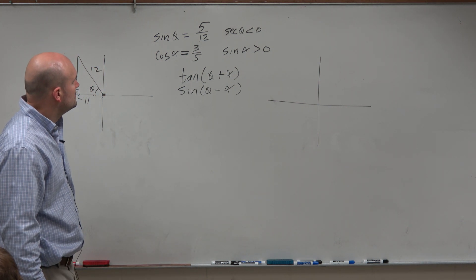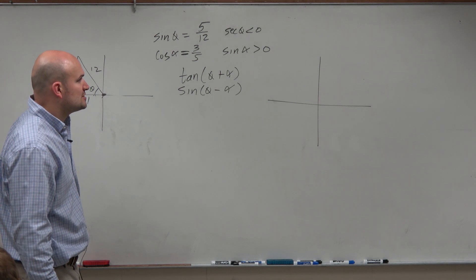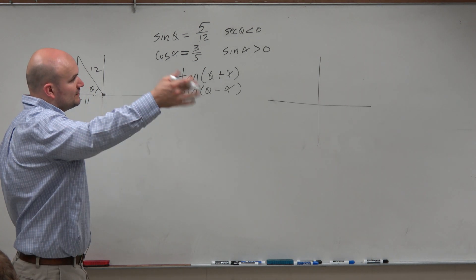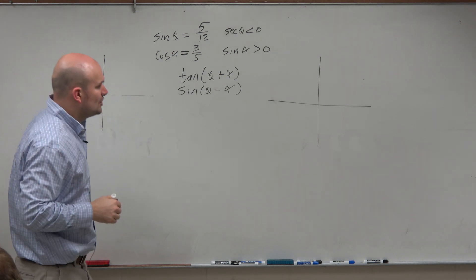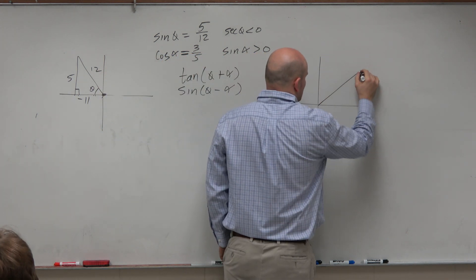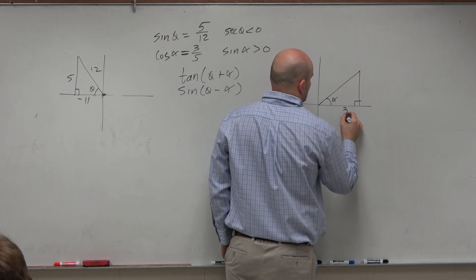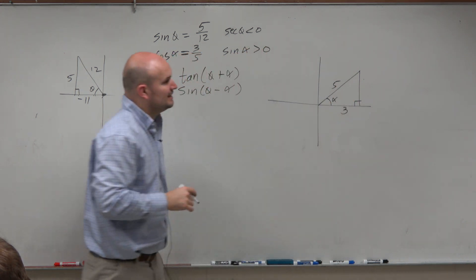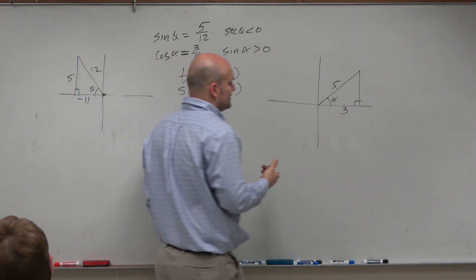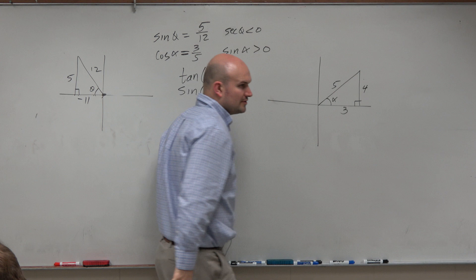So in this case, I have cosine is 3 over 5, where sine is greater than 0. Well, sine is greater than 0 in the first and the second quadrant, and since cosine is also positive, I know that that's going to be in the first quadrant. And by using my Pythagorean triples, or Pythagorean theorem, you can figure out the sides 3, 4, and 5.